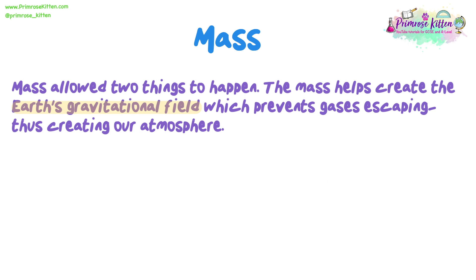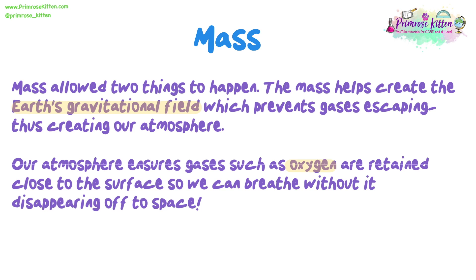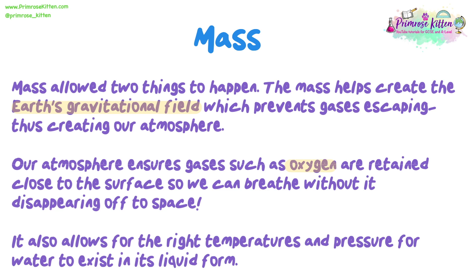Mass allowed two things to happen. The mass helps create the earth's gravitational field, which prevents gases escaping, thus creating our atmosphere. Our atmosphere ensures gases such as oxygen are retained close to the surface so we can breathe, without it disappearing off to space. It also allows for the right temperatures and pressure for water to exist in its liquid form.